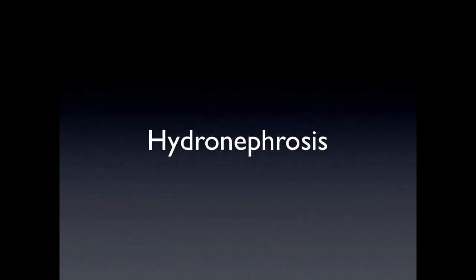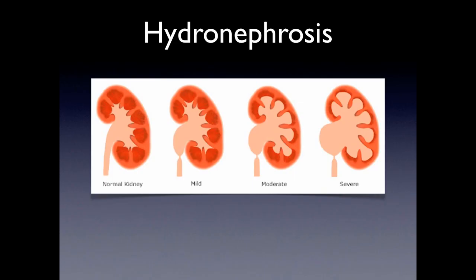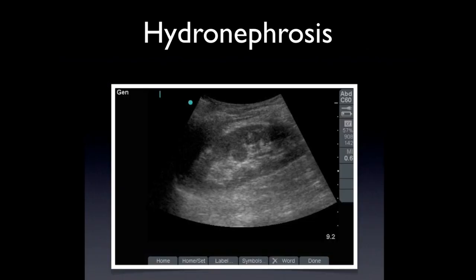You can identify hydronephrosis using ultrasound, and there are several degrees from mild to moderate to severe. Mild and moderate are a little bit more subjective. But when you get to the severe type, you definitely see a very obvious dilatation and some cortical thinning. This image shows a coronal view of a kidney, and you can see the collecting system with no dilatation. It's hyperechoic — this is a normal view of a kidney.